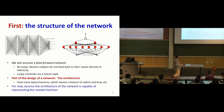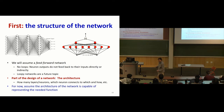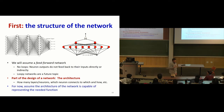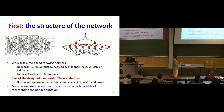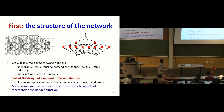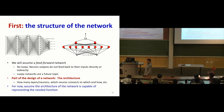We've seen the individual units. What about the network? We're going to assume a feed-forward network, meaning that when processing a specific input, no neuron ever sees any input or any modified version of any input twice — processing moves strictly in one direction. Part of the design is the architecture itself: how many layers, how many neurons. We won't get into that today; we're going to assume the architecture is capable of representing the needed function. Deciding the optimal architecture is an art, not a science.